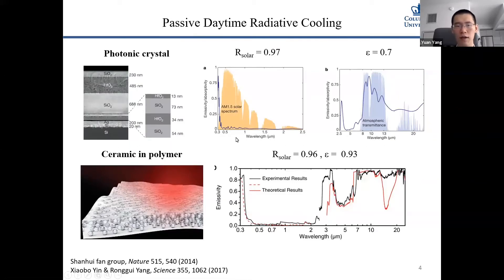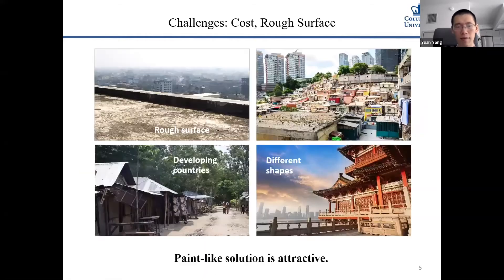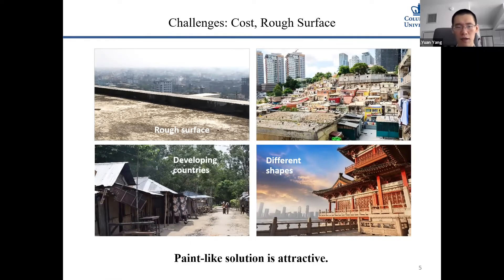But for these structures, one issue is that they are film-like. Film-like structures are very difficult to apply to surfaces with non-flat shapes. If you put the film on a rough surface, the film can cool by itself, but the high thermal contact resistance makes it very difficult to transfer that cooling inside the building. They are also difficult to apply to different shapes, and thin-film manufacturing has a high cost, so it may not be suitable for developing countries.